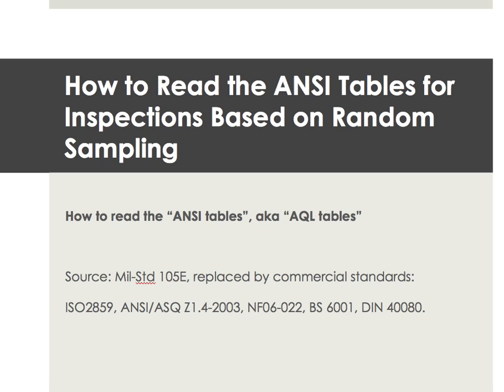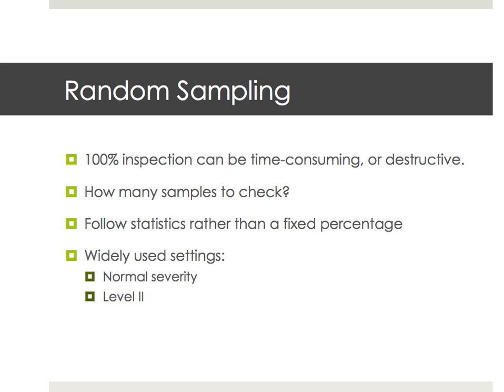Just a little bit of background: we cannot always do 100% inspection on a batch before accepting it. Just imagine checking 200 pieces of sofas, or checking bullets used in a gun — either it takes forever or it destroys the samples. So the question is: how many samples to check? We strongly advise following statistics rather than a fixed percentage like 10%.